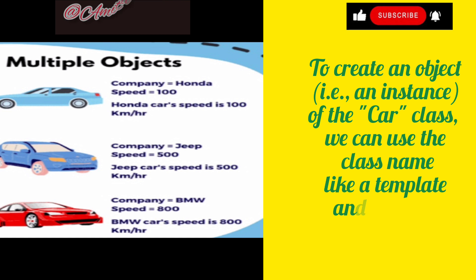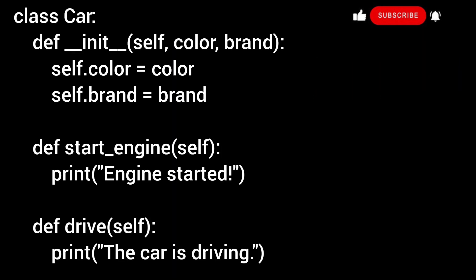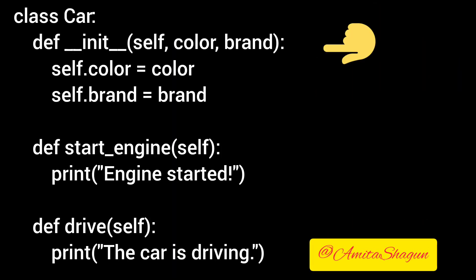In this example, we define the class Car with the attributes color and brand using the __init__ method. The __init__ method is a special method that runs automatically when an object is created, allowing us to set initial attribute values.